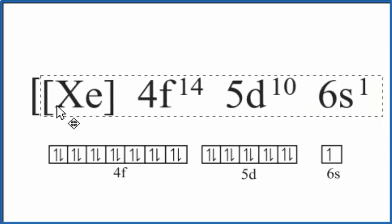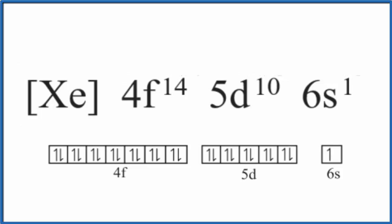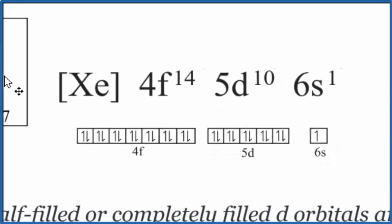Now we would write the configuration like this here. We have the 5D10 full and the 6S1. That just has one, but that's okay. So this is the electron configuration for gold.